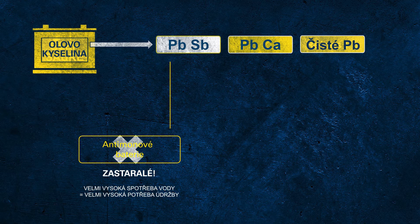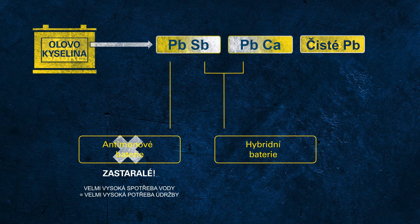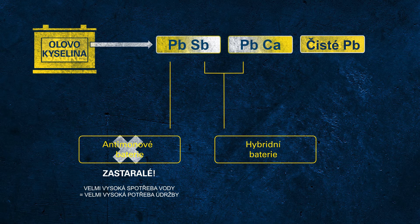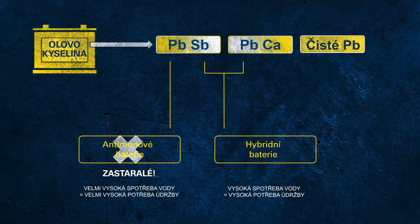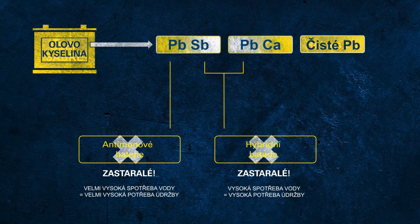The next step in this development was the so-called hybrid batteries. In this case, hybrid indicates that one grid was still made of PBSB but the other one was made of lead calcium alloy. Even these batteries had lower water loss compared to antimony batteries, but they still demand regular checks of electrolyte and to be topped up regularly with distilled water.